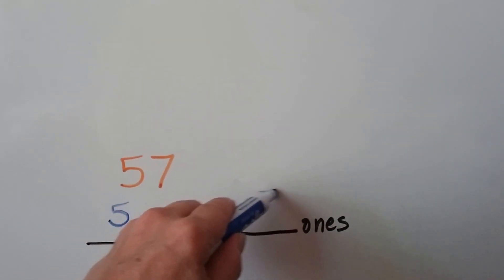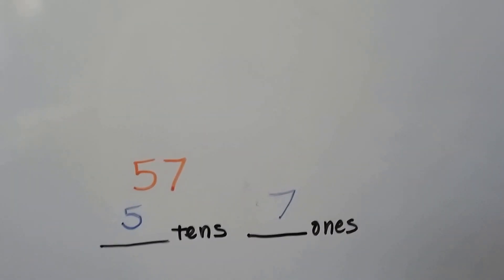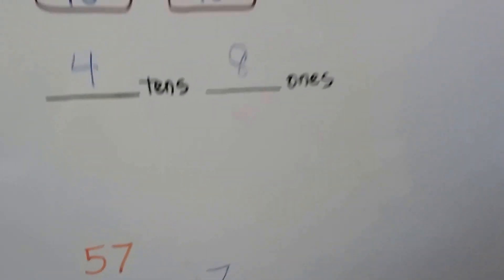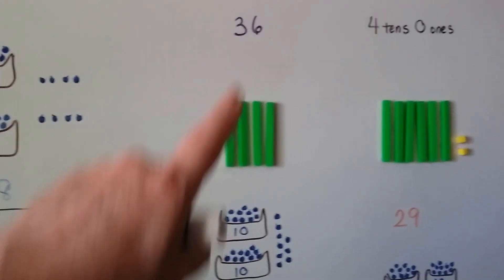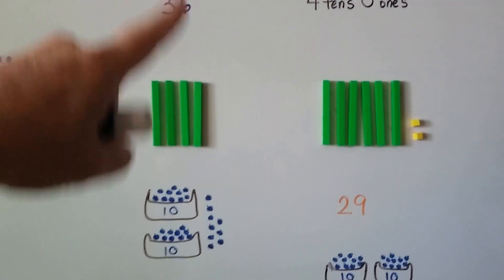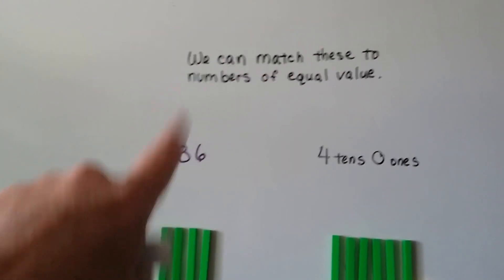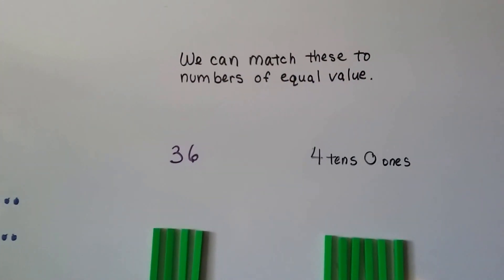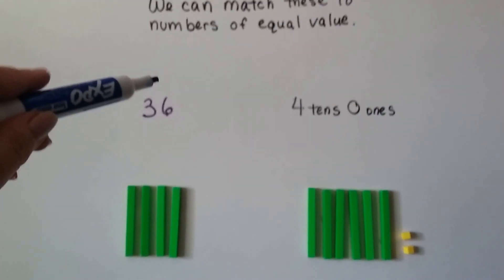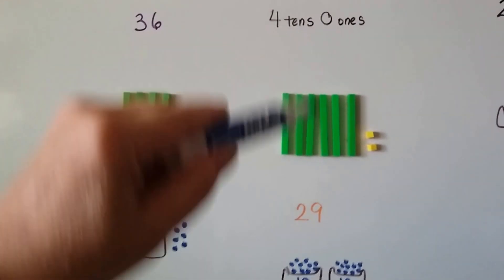How many tens and ones are here? We have a five in the tens place and a seven in the ones place — five tens and seven ones. Now we've got them all in two rows, and we can match these two numbers of equal value.